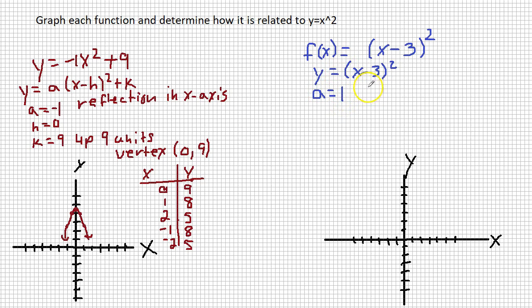So the value of A is 1. There's no number out front, so it's 1. And H, well, remember, negative H equals negative 3. So positive H will be positive 3. So H is 3. And K, there's no number out here, so K is 0.